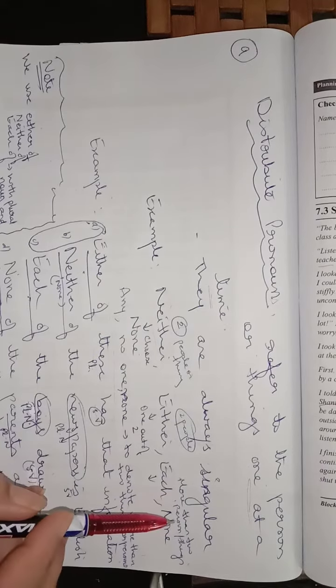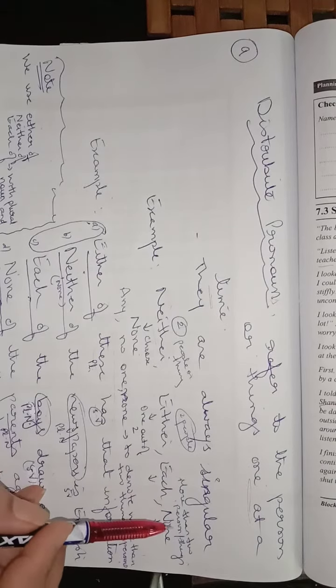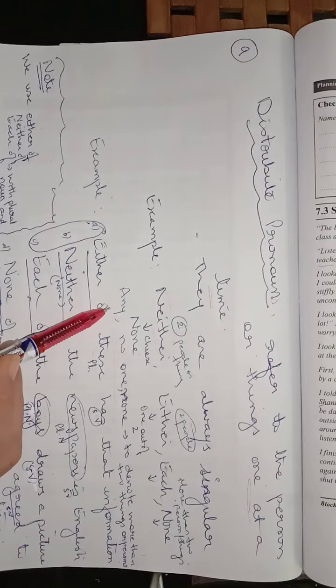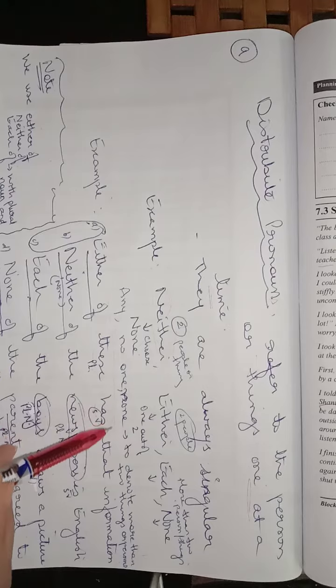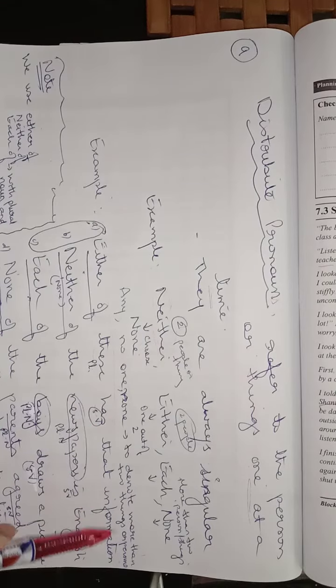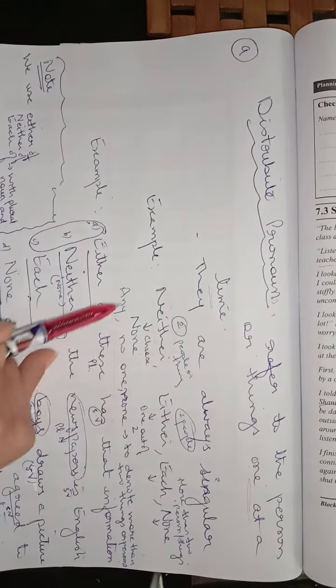Each, more than two persons or things. It can be more than two persons. Any, no one, none to denote more than two things or persons. You use these distributive pronouns.